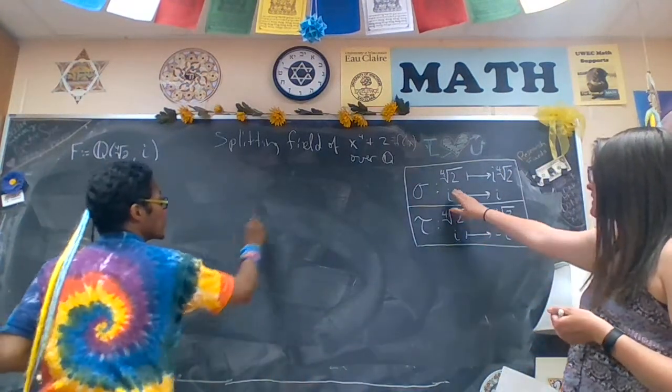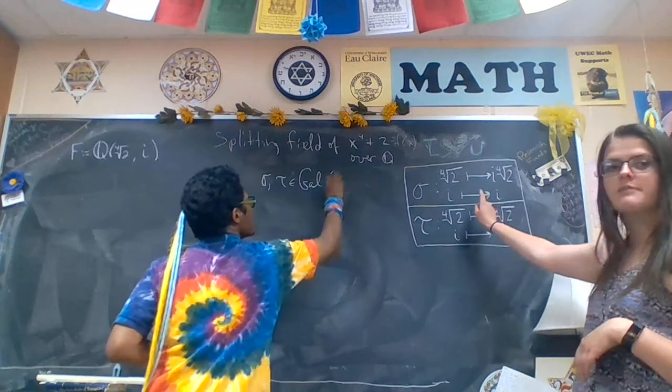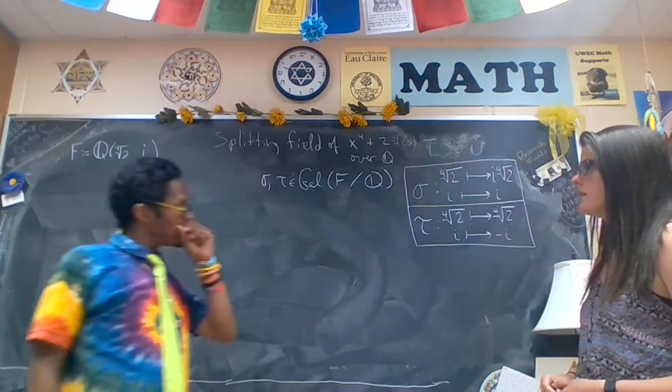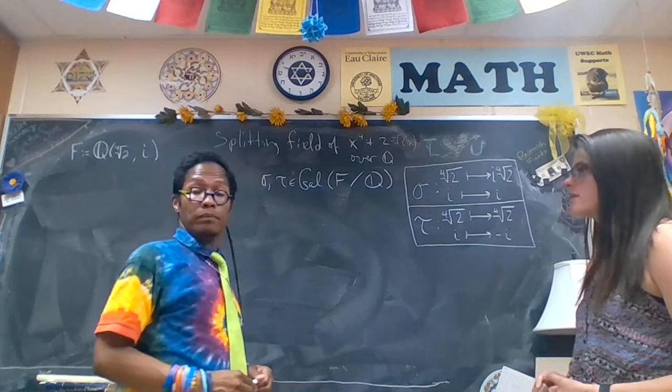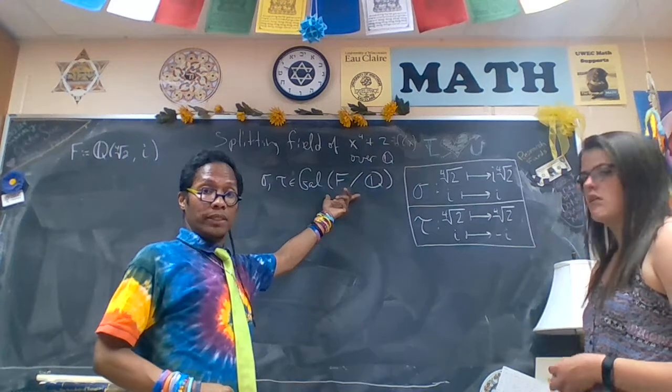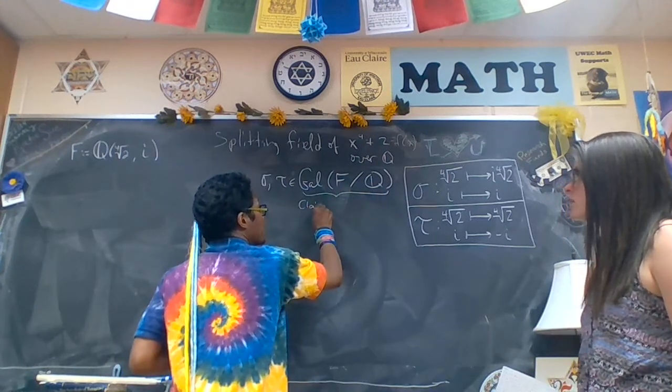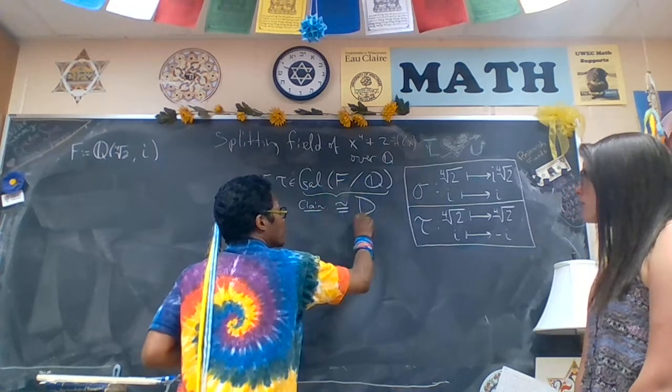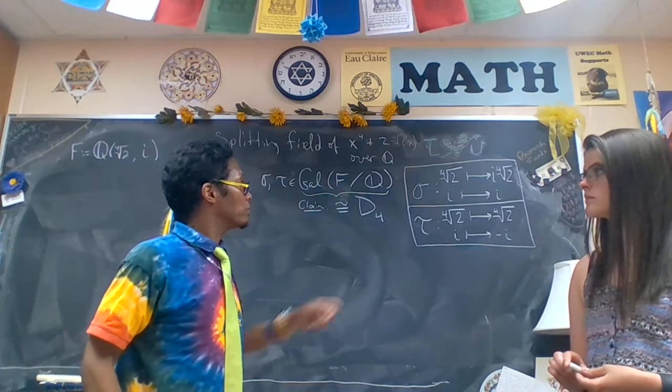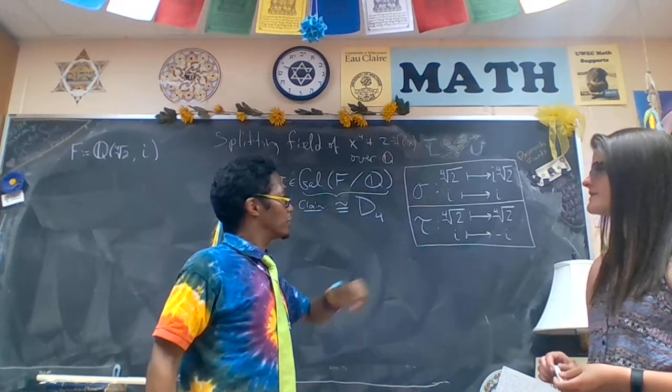And so sigma is taking the fourth root of two to i fourth root of two, and then it's fixing i. And then tau fixes the fourth root of two and then takes i to negative i. And we're going to show that this group of order eight, the claim is that this is isomorphic to the symmetry group of the square. So guess what? This might be rotations. Mackenzie, what might that be? Flips.